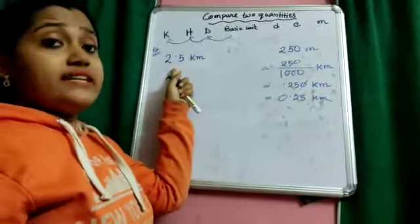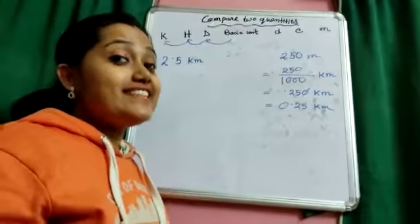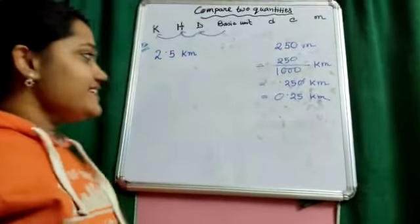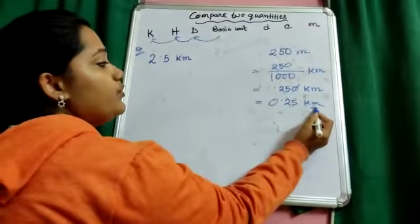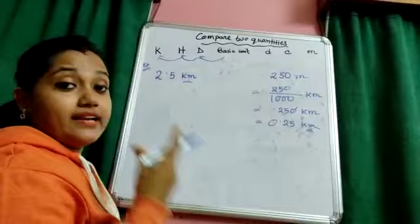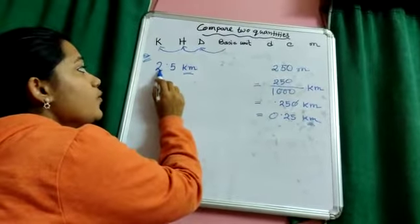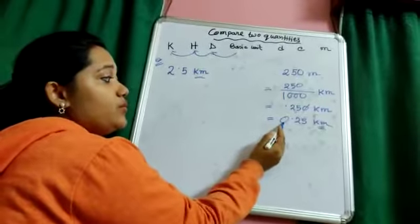That is 0.25, and here it is 2.5. Which one is bigger? You have learned this decimal comparison. Both of these units are in kilometer, so you can compare it very easily.